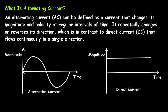This cycle from here to here is called one complete cycle, and it repeats again and again. It repeatedly changes or reverses its direction, which is in contrast to DC — direct current — that flows continuously in a single direction. DC continuously flows in a single direction while AC changes its polarity and magnitude. The flow of electric charge periodically reverses direction, and this is what defines alternating current.